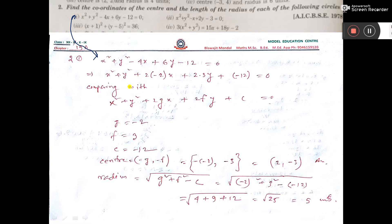So I have written in this form x square plus y square plus 2 into something into x plus 2 into something into y plus something equal to 0.